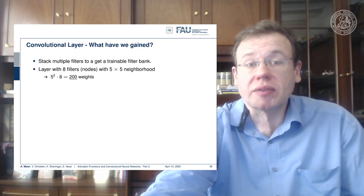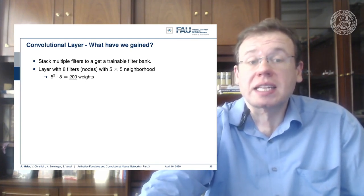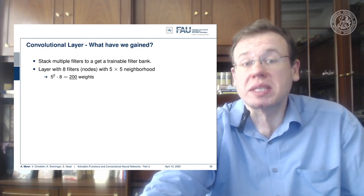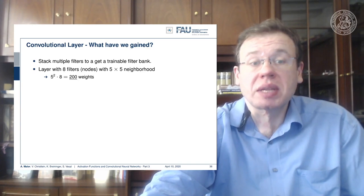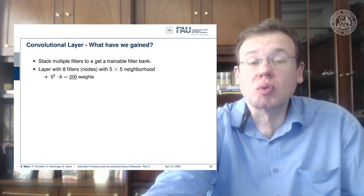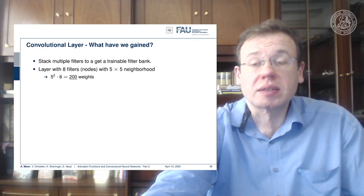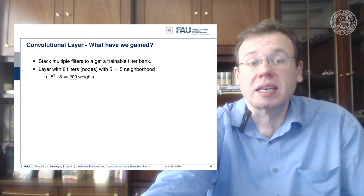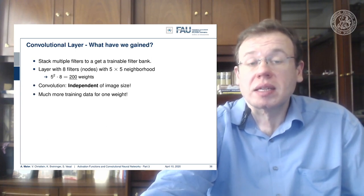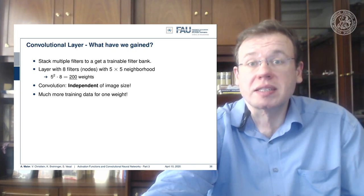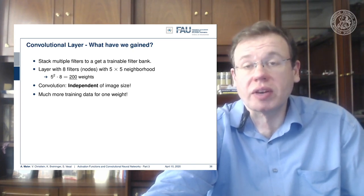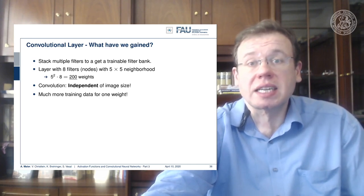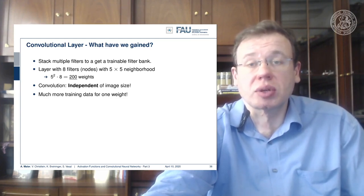What have we gained with convolutional layers? If we stack multiple filters, we get a trainable filter bank. With eight filters in a 5x5 neighborhood, we have 5 squared times 8 — just 200 weights — considerably smaller than the 2 million weights seen before. Convolution can be applied independent of the image size, so we can convolve any image with those filters and the activation maps simply change with different input sizes. We have much more data to train for a single weight, which is a great advantage.